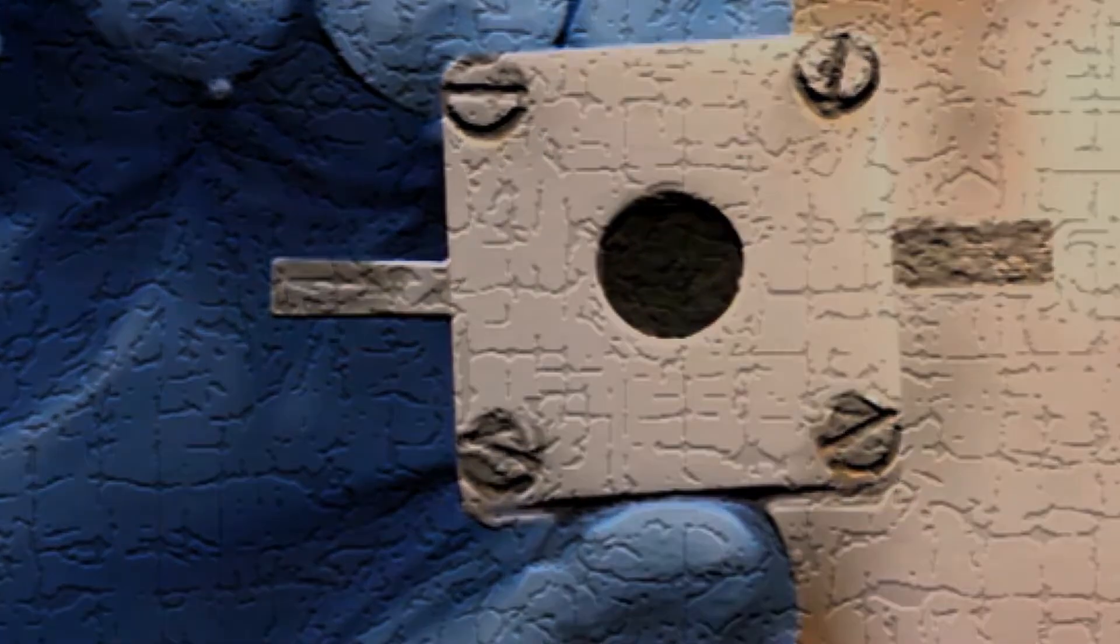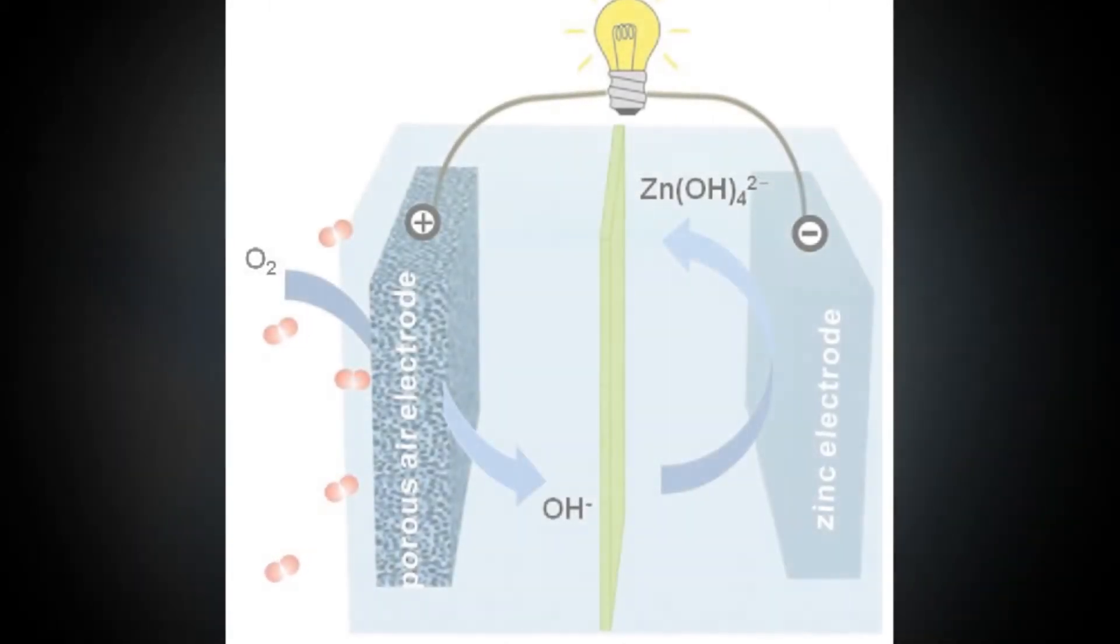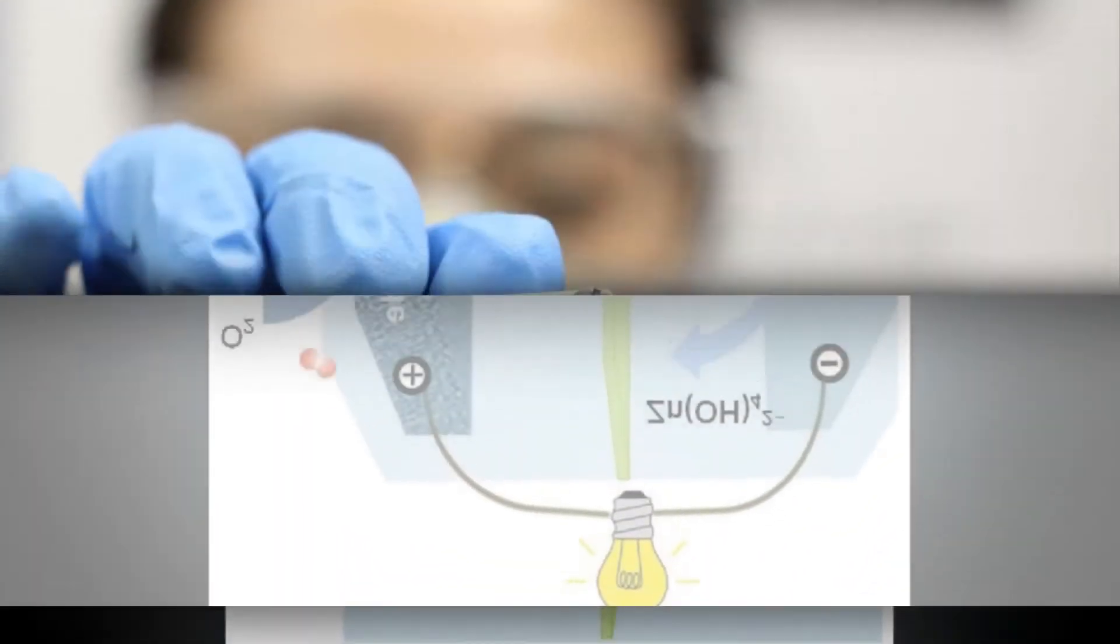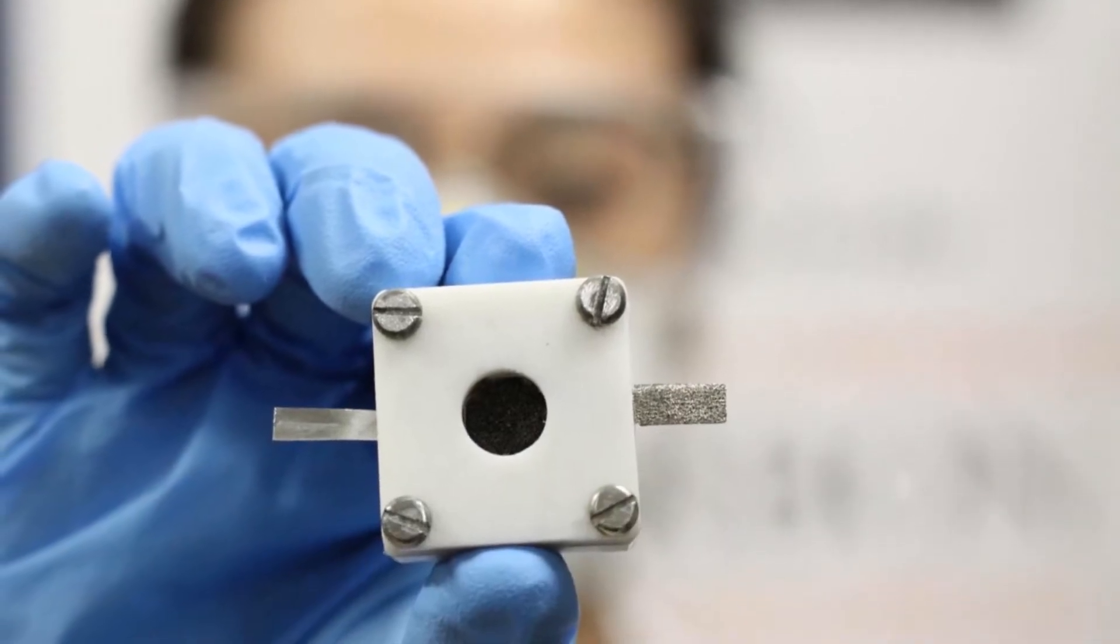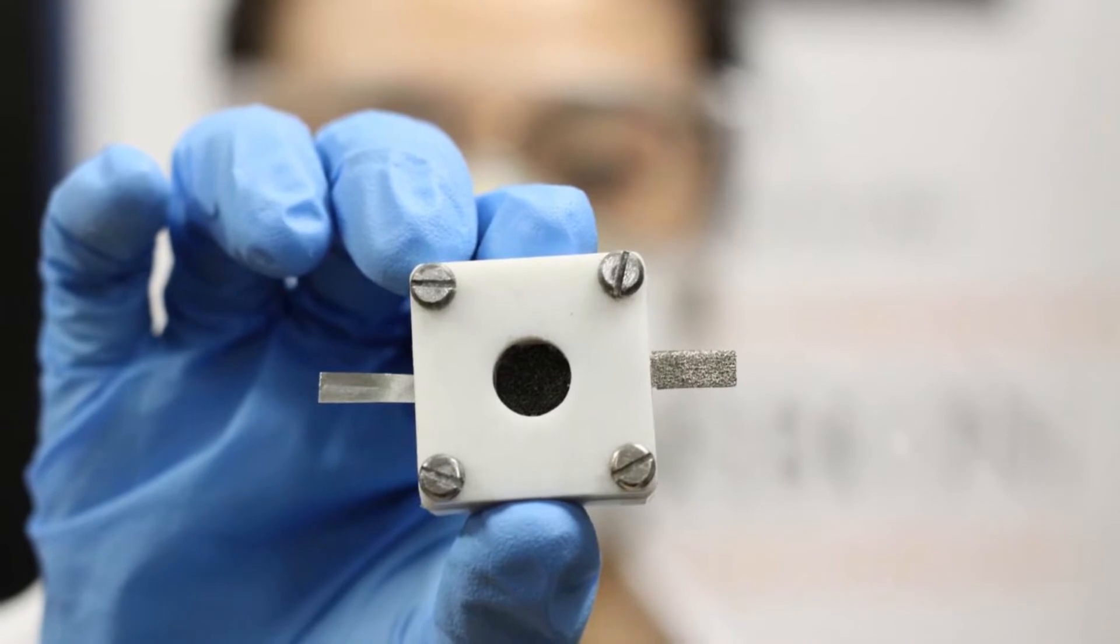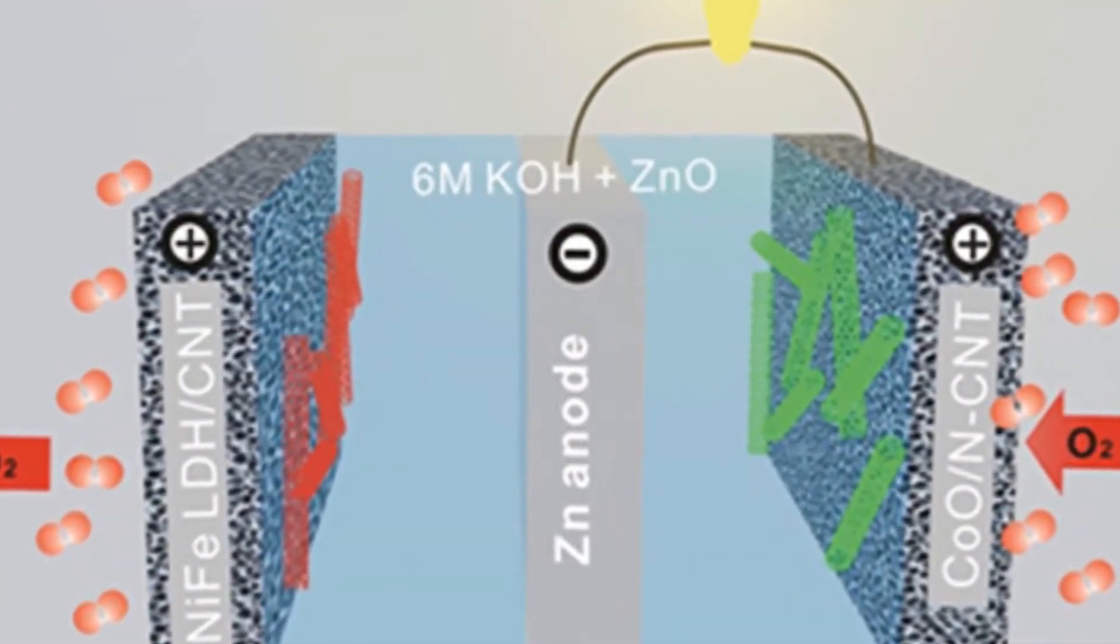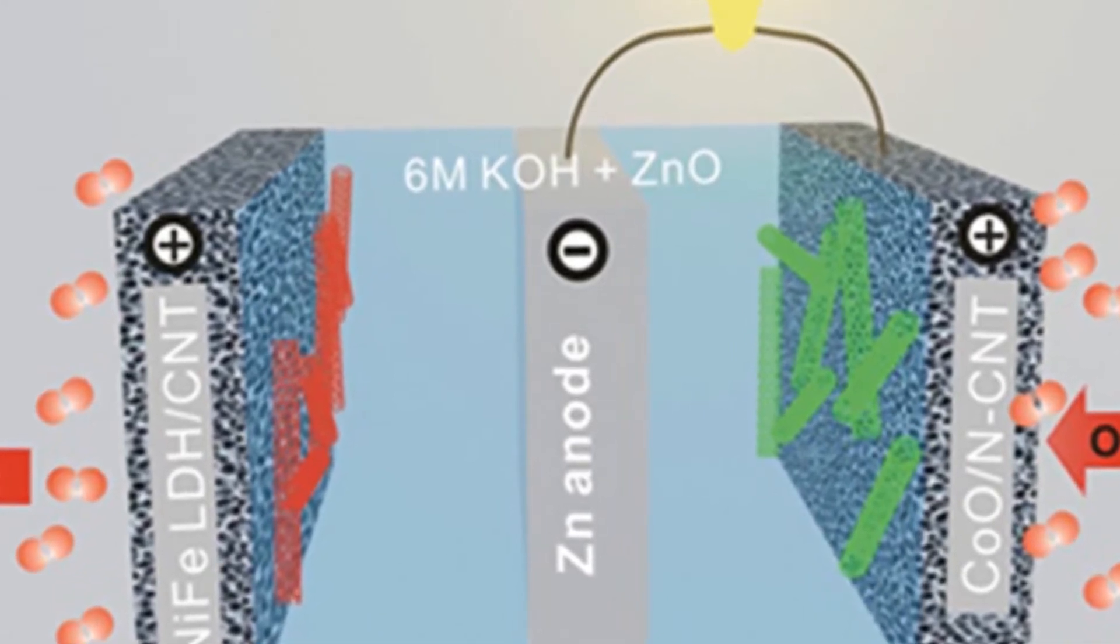While zinc air batteries are currently used as an energy source in hearing aids and some film cameras and railway signal devices, their widespread use has been hindered by the fact that, up until now, recharging them has proved difficult. This is due to the lack of electrocatalysts that successfully reduce and generate oxygen during the discharging and charging of a battery.